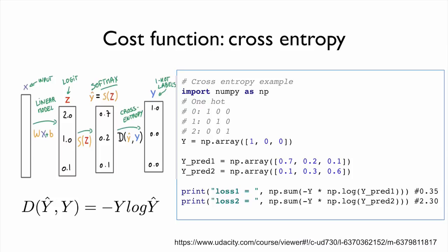Let's use a simple numpy code example to see how cross-entropy works. For y (the label), we use the one-hot representation [1, 0, 0]. For prediction 1, we use [0.7, 0.2, 0.1] — a good prediction because the probability of y being 0 is very high. For comparison, prediction 2 has 0.6 probability for class 2, which is the wrong class. We expect the loss for the correct prediction to be small, and the loss for the wrong prediction to be high.